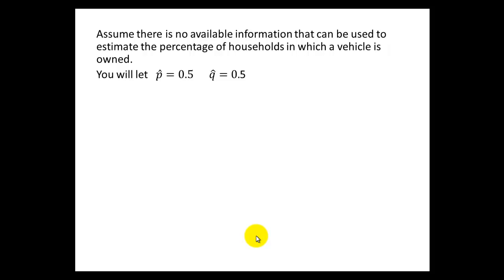This will give us the most conservative estimate of size, which is actually the largest, that will allow us to have the type of confidence we want and the type of margin of error. So when you don't know a value for p hat, which is often the case, then we just share the load. Let p hat be a half and let q hat be a half.